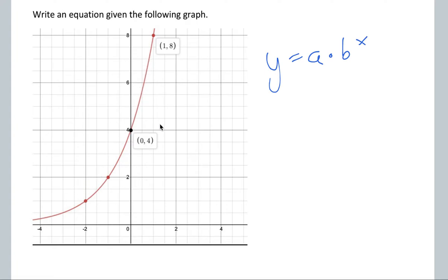So our a value is our initial value, which is when x is equal to 0. Well, when x is equal to 0, it looks like y is equal to 4. So that's why our a value or the initial value is 4.